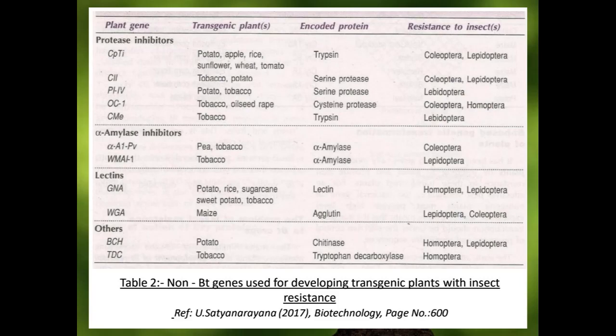Alpha amylase inhibitors, as the name suggests, are inhibitors that inhibit the enzyme alpha amylase, which digests starch. Insect larvae secrete a gut enzyme, alpha amylase, to digest starch. When an insect eats a plant containing alpha amylase inhibitors, it blocks the activity of alpha amylase in the larvae, thereby preventing starch digestion, leading to starvation and death of the insect.